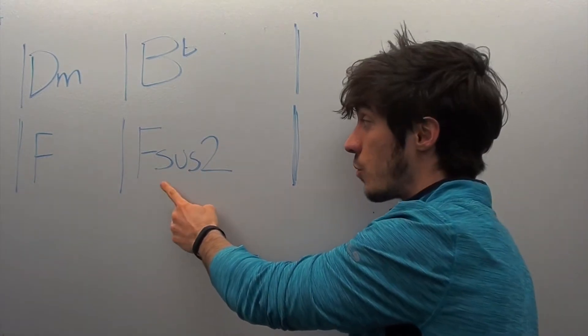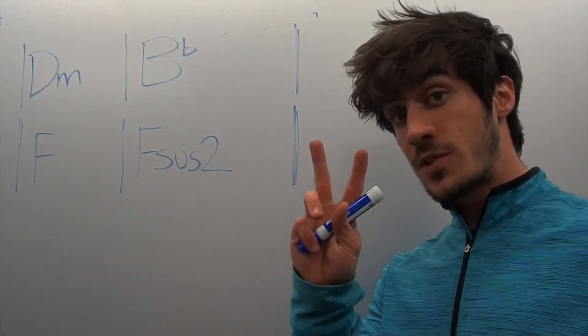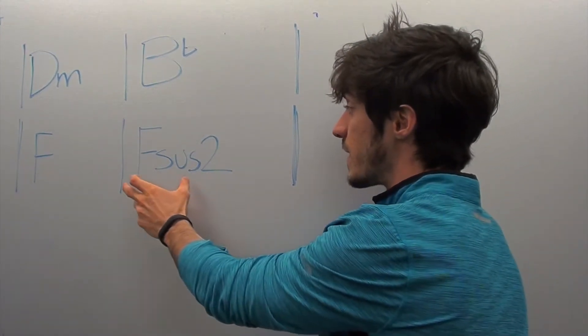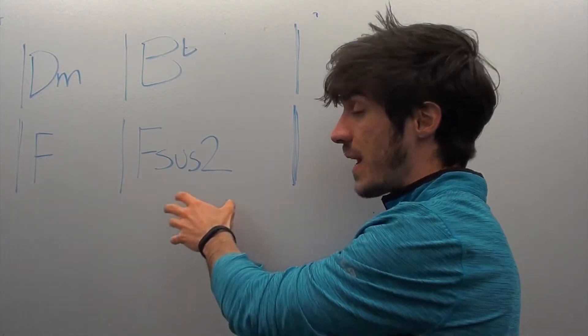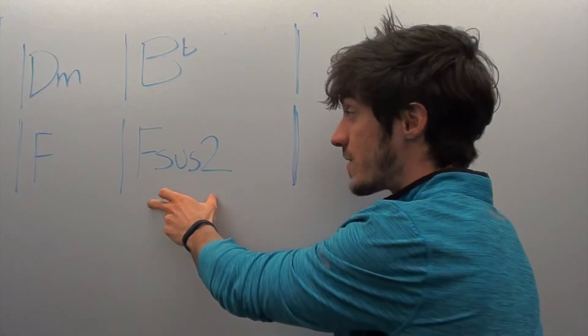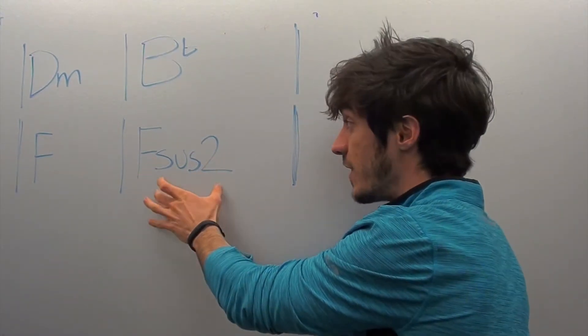This last one's a little bit weird. An F sus 2 takes the second tone of your scale, in this case a G, and brings that into the chord. So normally this is an F, an A, and a C, but adding a 2 in there just gives it a little bit of tension. It's a little uneven. We don't see this in pop music very often, and that's one cool chord in this progression.